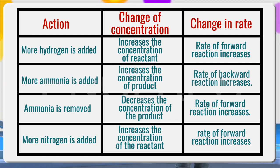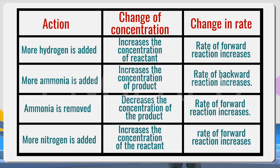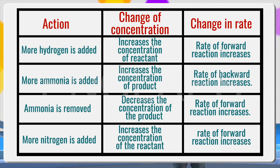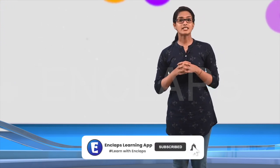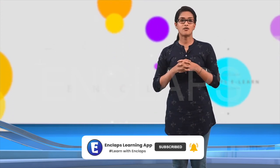Now, let us complete the table given here. When more hydrogen is added to a system at equilibrium, the concentration of reactant increases and the rate of forward reaction increases. When more ammonia is added, the concentration of products increases and the rate of backward reaction increases. When more nitrogen is added, the concentration of reactant increases and the rate of forward reaction increases. I hope you have understood the effect of concentration on equilibrium. We shall discuss the other factors affecting the equilibrium of a system later.